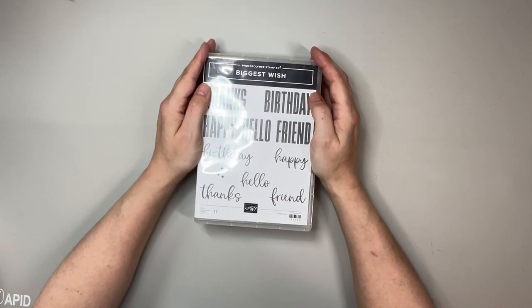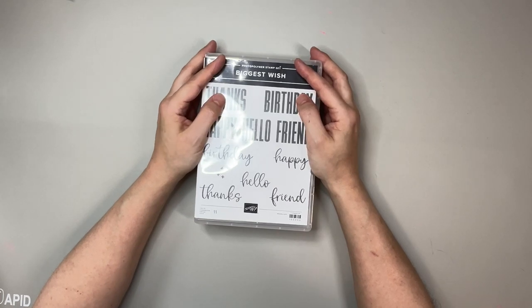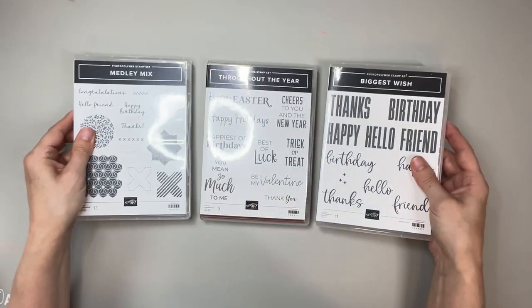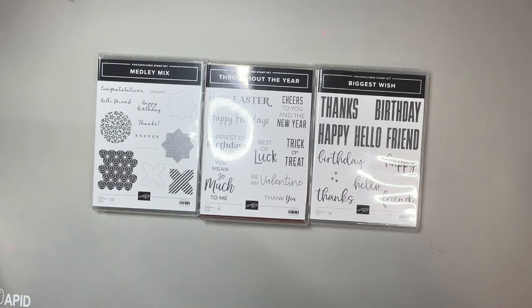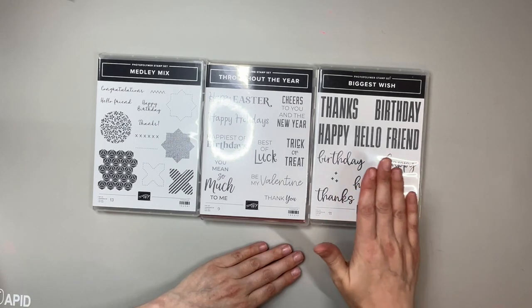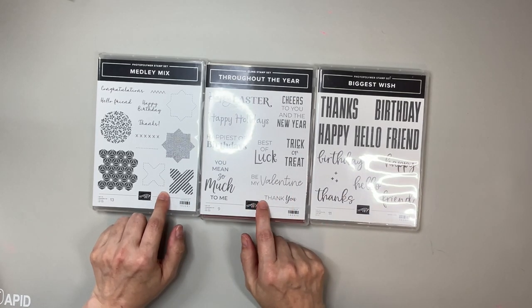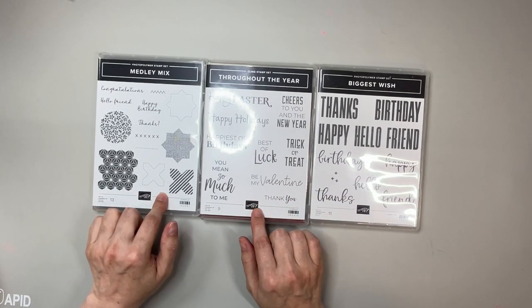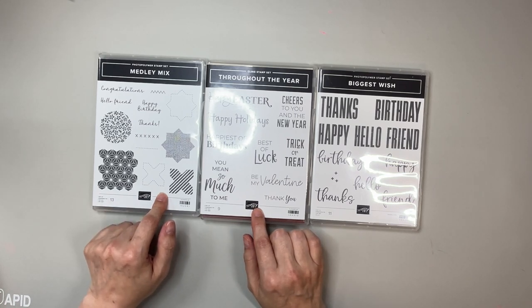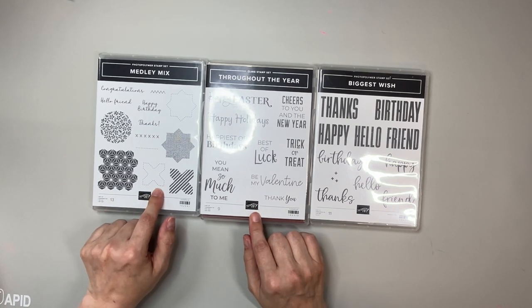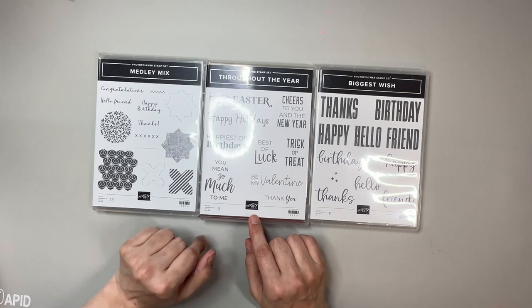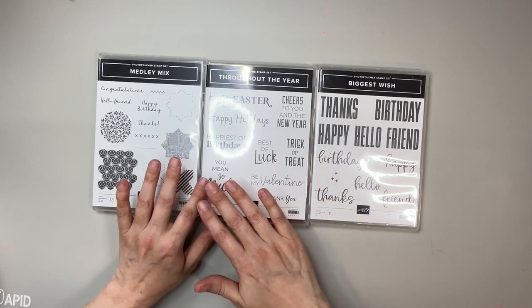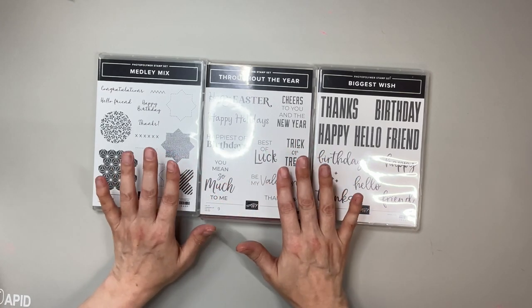Some of you might know, but today being September 2nd, we are starting a new series for this month focusing on being grateful. I have three stamp sets here that we are going to be using. One of them, Biggest Wish, is a carryover, but these two are new from our holiday catalog which launches next Wednesday, September 6th. This coordinates with a punch duo in the annual.